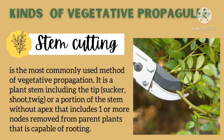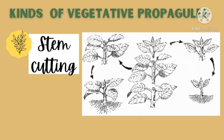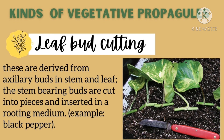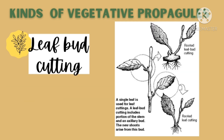Stem cuttings are the most commonly used methods of vegetative propagation. It is a plant stem including a tip like a shoot, twig, or sucker, or a portion of a stem without the apex that includes one or more nodes removed from a parent plant and capable of rooting. This is also accompanied by leaf bud cutting propagation.